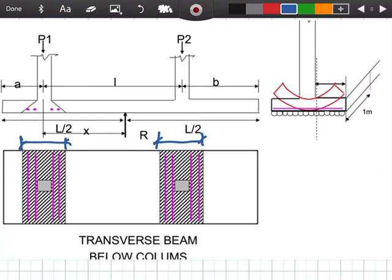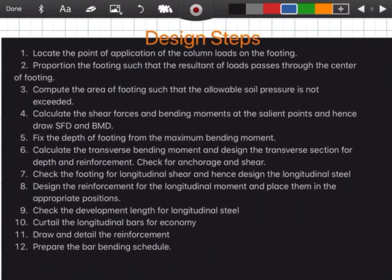Next is design steps. We have design steps. First, locate the point of application of the column loads on the footing, because we will align it with the resultant to make it uniform. Proportion the footing such that the resultant of loads passes through the center of the footing. Compute the area of the footing such that the allowable soil pressure is not exceeded.